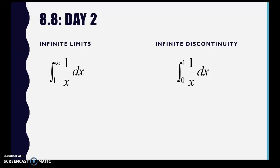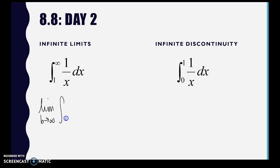All right, so 8.8, day 2 — another form of an improper integral. We already looked at infinite limits, where one of the bounds is infinity. We set it up as a limit statement: the limit as b approaches infinity, integrating from 1 to b.